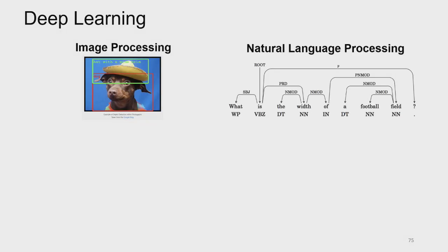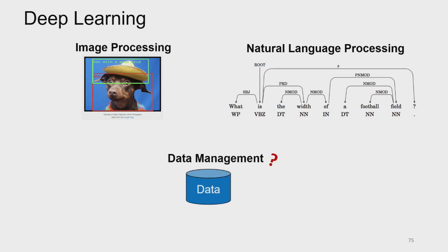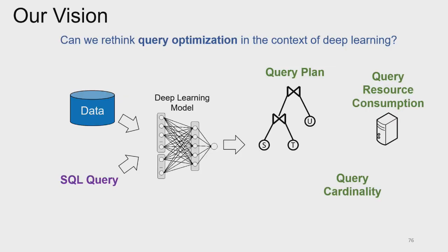Deep learning has been successful in various applications such as image processing and natural language processing. In this work, we want to look at what deep learning can do in the context of data management. Our vision is to rethink query optimization in the context of deep learning: given a dataset and a query, can we use a model to describe different properties of the query — such as an optimal query plan, resource consumption, or the query's cardinality? As a first step, we're focusing on estimating query cardinality.